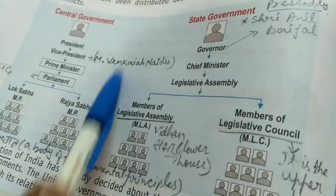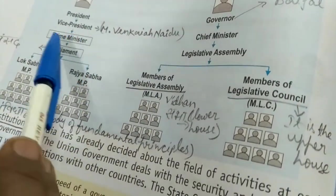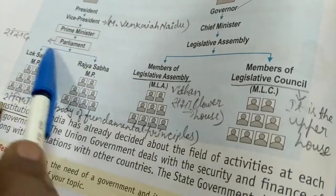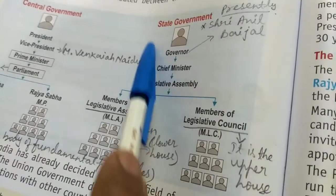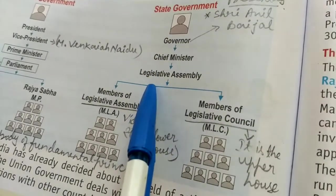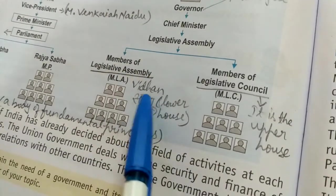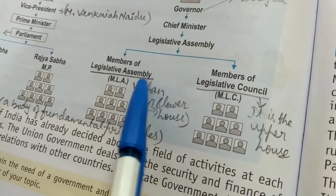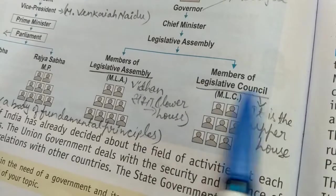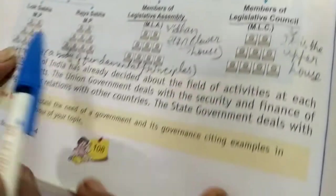The central government consists of the President, Vice President, Prime Minister, and Parliament — also known as Sansad. Parliament has two wings: the Lok Sabha and the Rajya Sabha. At the state level, there is a Governor, below whom is the Chief Minister, then the Legislative Assembly, known as Vidhan Sabha. Its members are MLAs. The second wing is the Legislative Council, also known as Vidhan Parishad — the upper house, while Vidhan Sabha is the lower house.